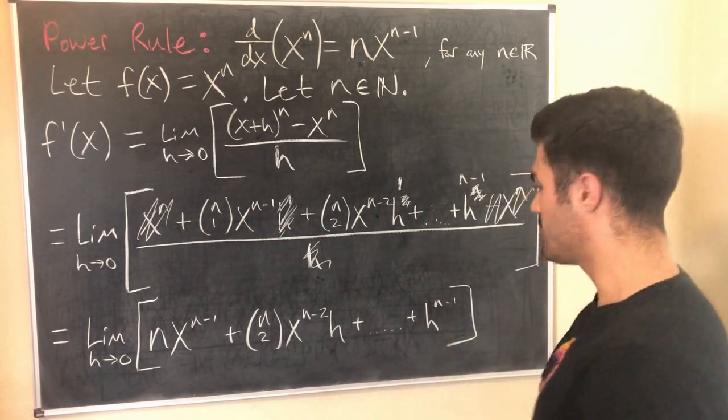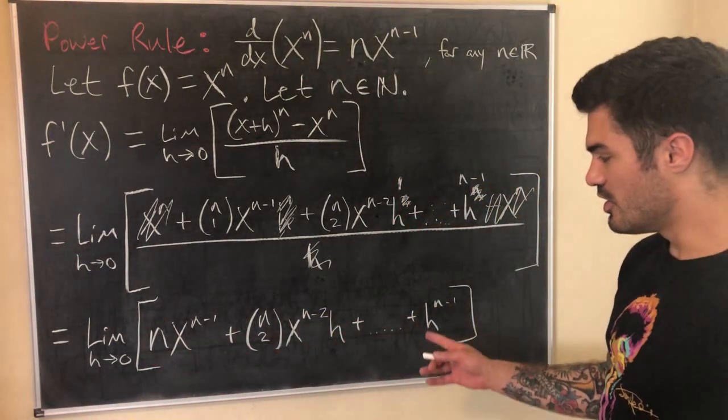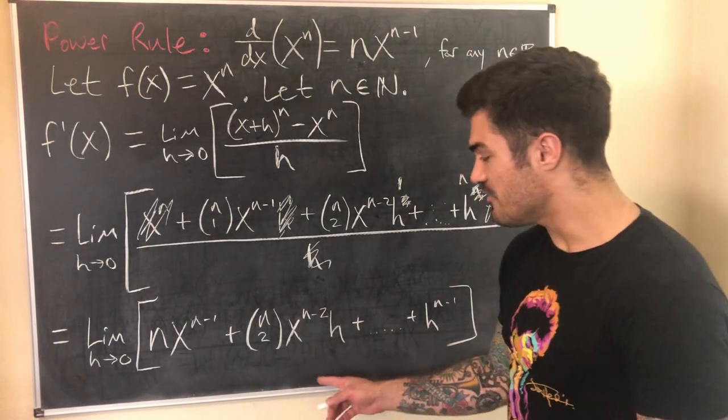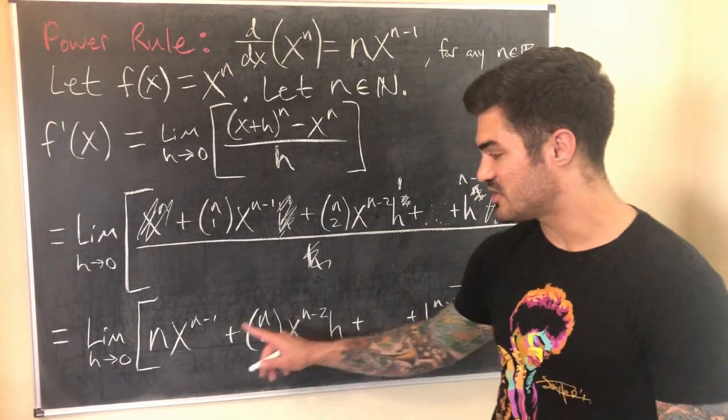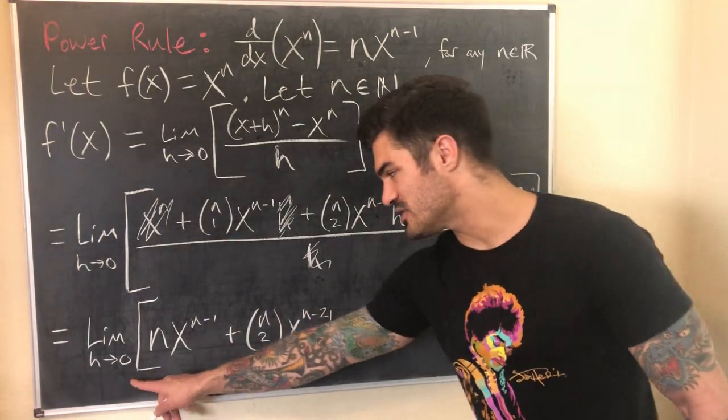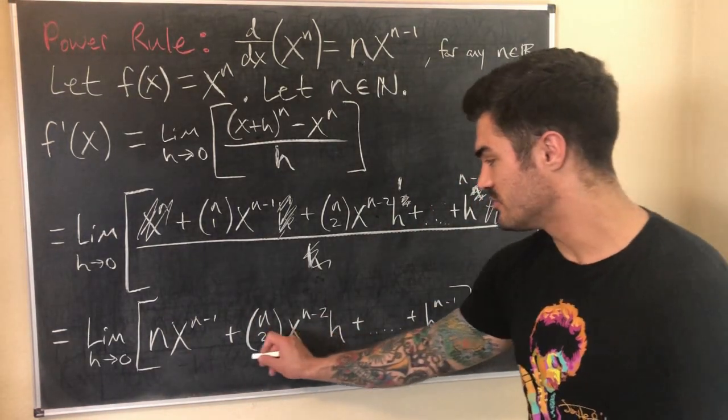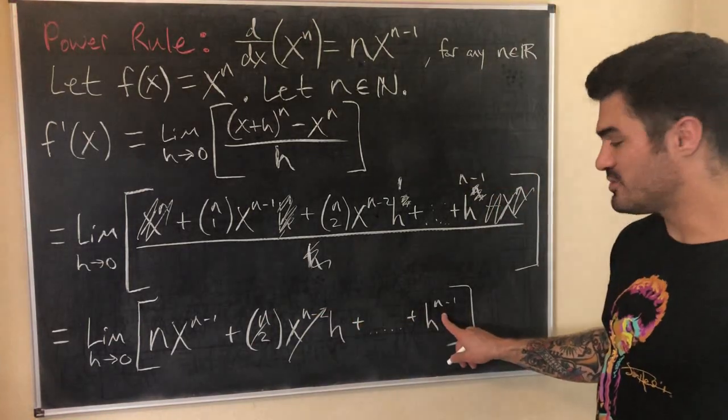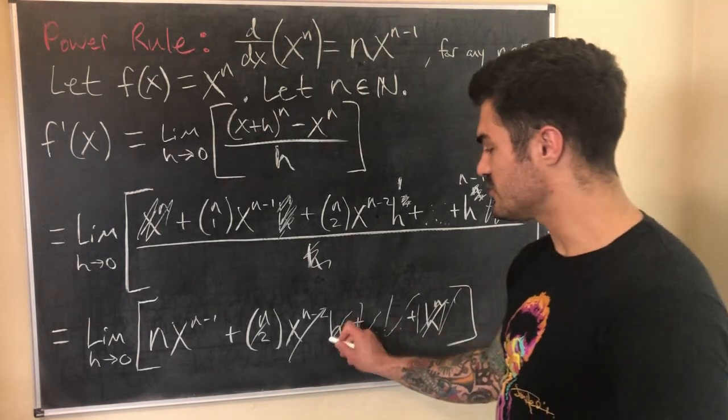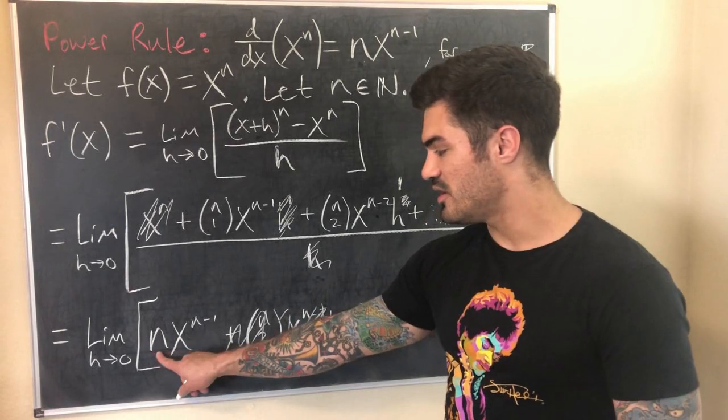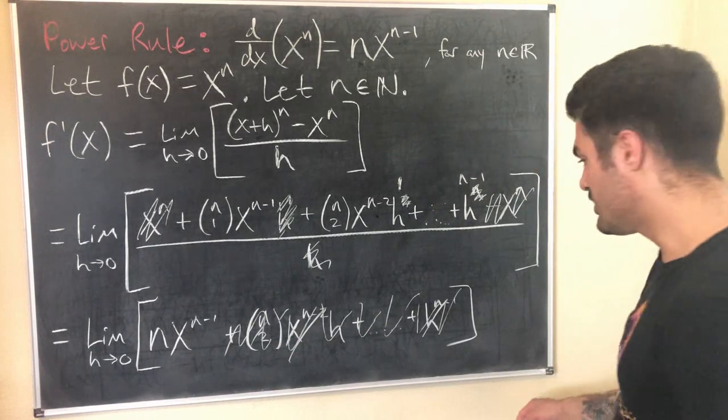Now look how nice this limit works out because what we have here is the limit as h goes to zero of this long expression. But almost every term in this expression has an h in it. In fact, every term has at least one h in it except for our first term. So what happens when we take this limit is this is going to go to zero because zero times anything is zero. This last term definitely going to go to zero. That's zero to some power. So it turns out that everything disappears. All this stuff is gone. Everything goes to zero except n times x to the n minus 1. There's no h in that term. That gets left alone.